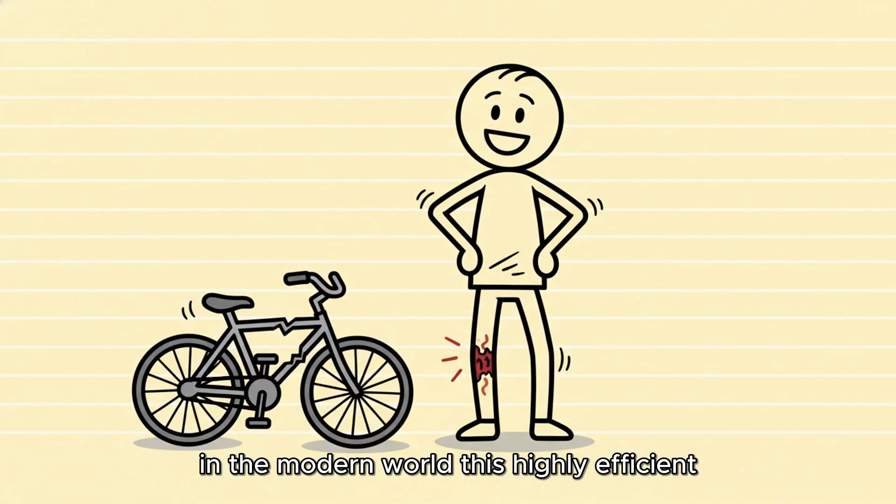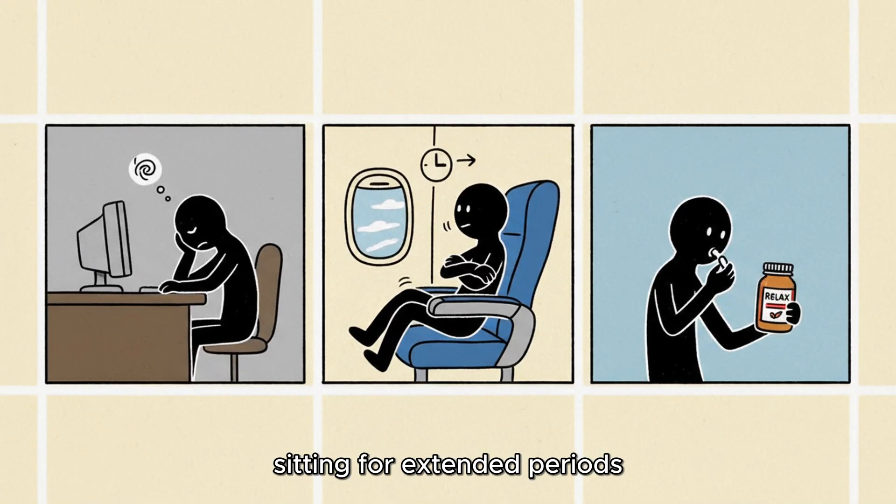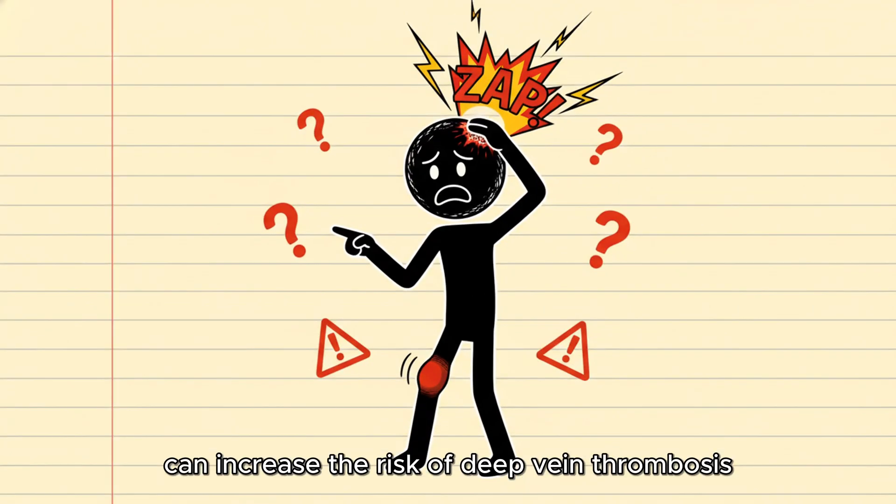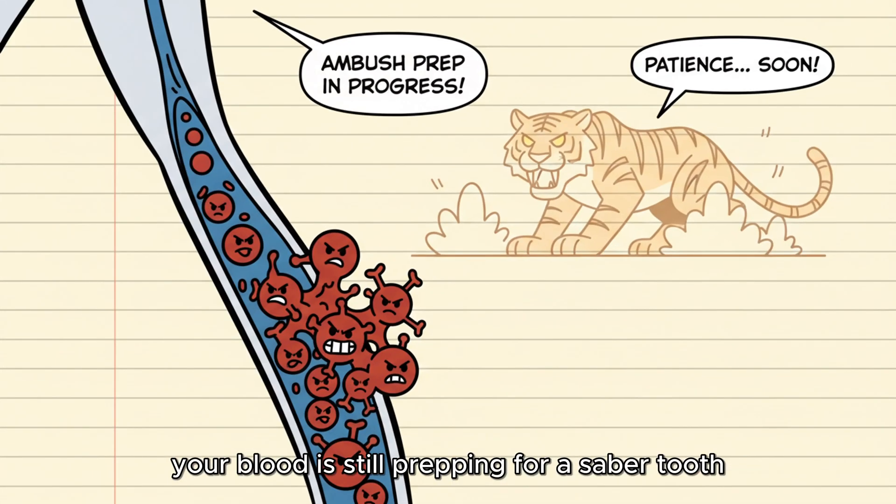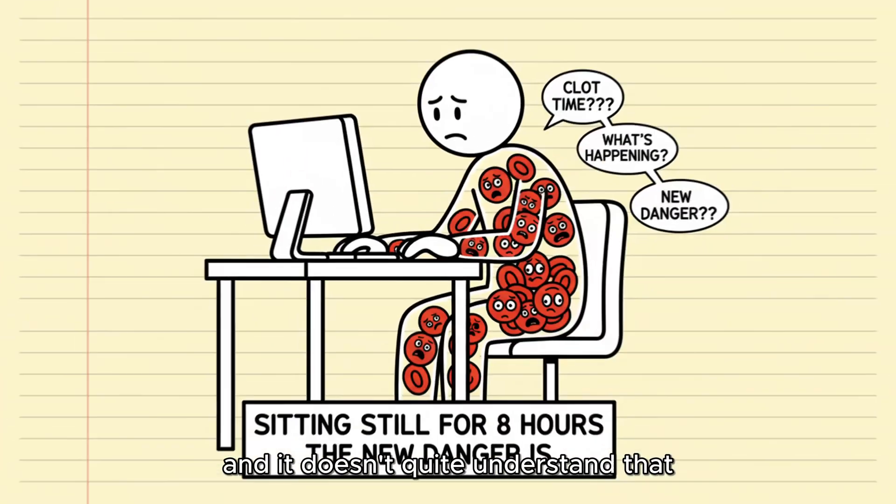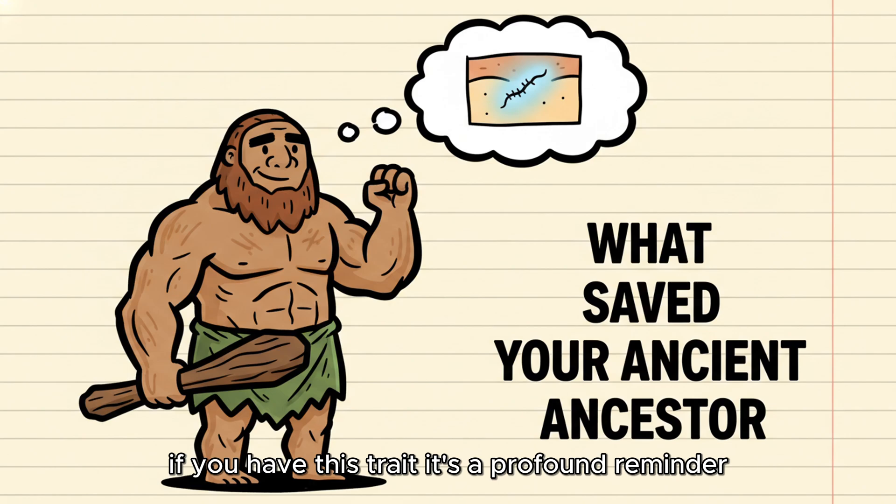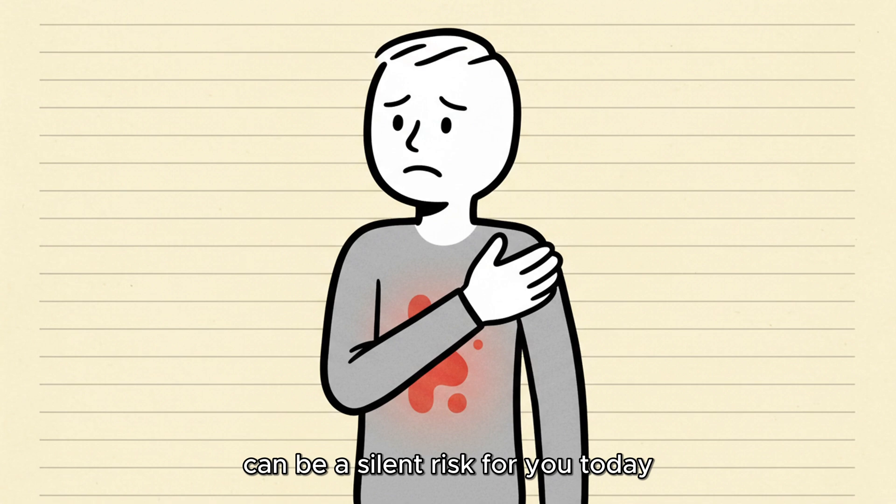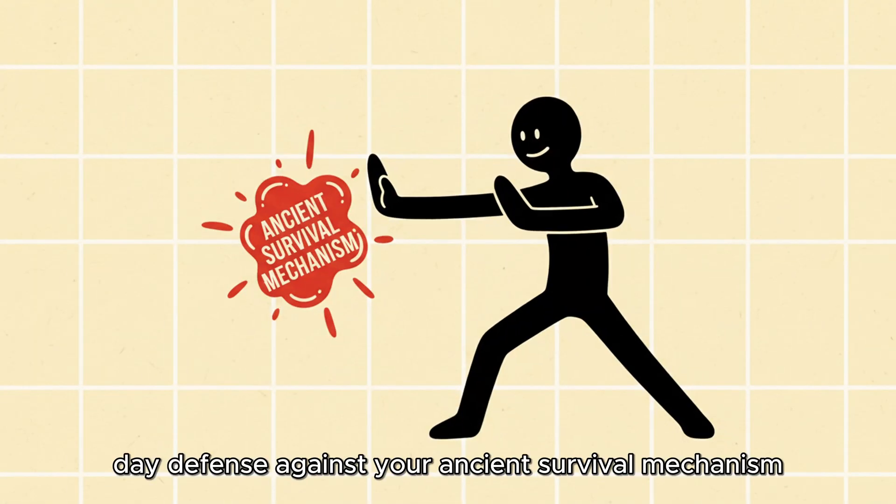In the modern world, this highly efficient clotting mechanism is still useful if you have a bad accident. However, it's a liability when combined with our sedentary modern lifestyles. Sitting for extended periods, hello desk job, long flights, and certain modern medications can increase the risk of deep vein thrombosis, DVT, blood clots, or even stroke. Your blood is still prepping for a saber-toothed tiger ambush, and it doesn't quite understand that sitting still in a chair for eight hours is the new danger. If you have this trait, it's a profound reminder that what saved your ancient ancestor can be a silent risk for you today. Simple preventative measures like standing up and moving every hour are your modern-day defense against your ancient survival mechanism.